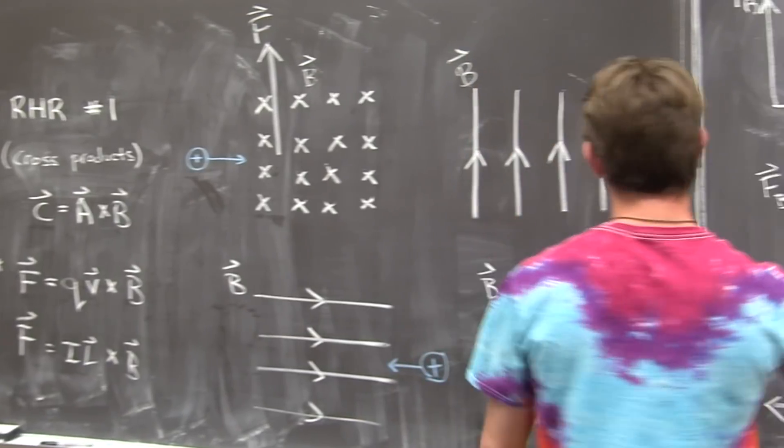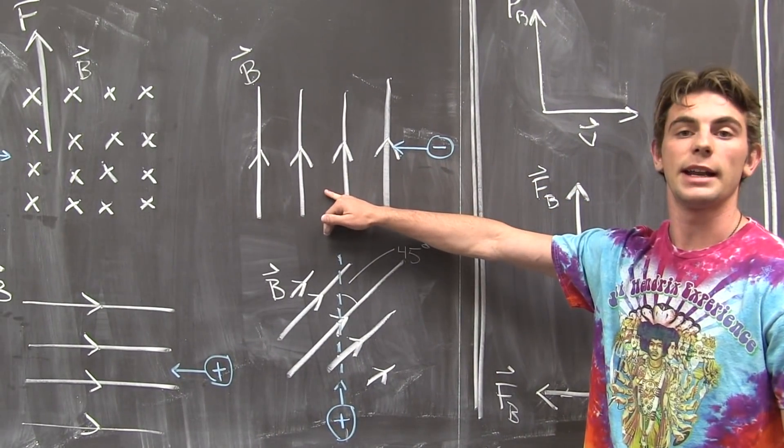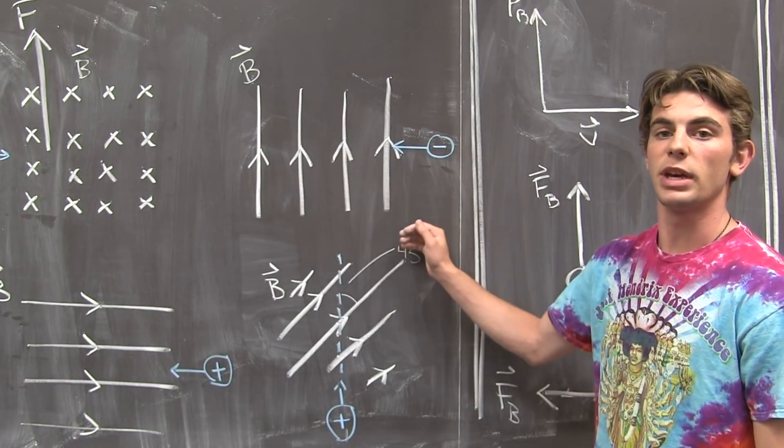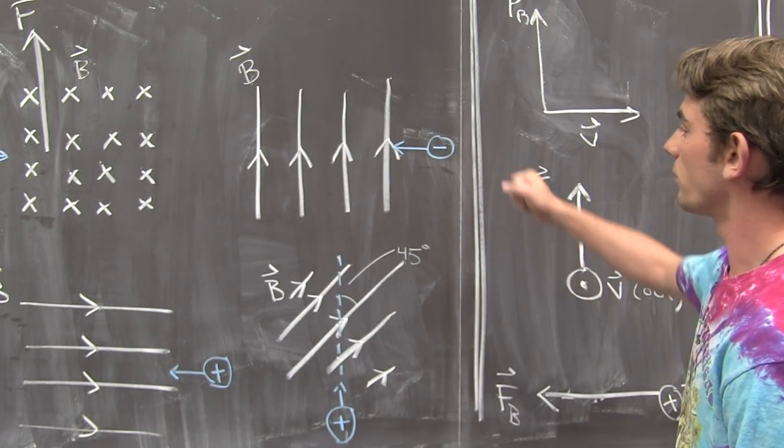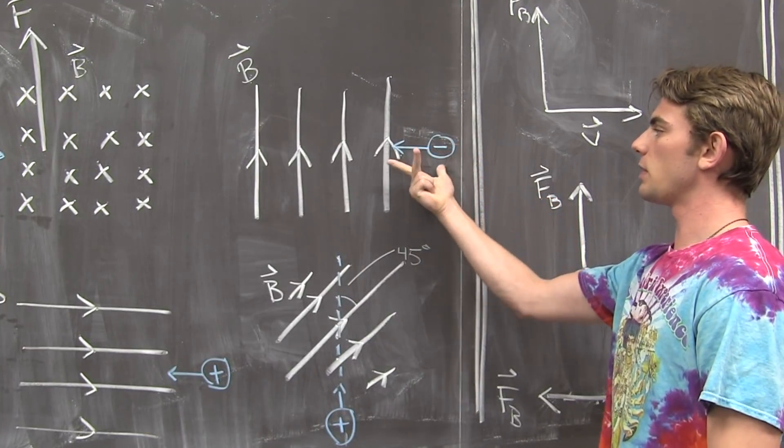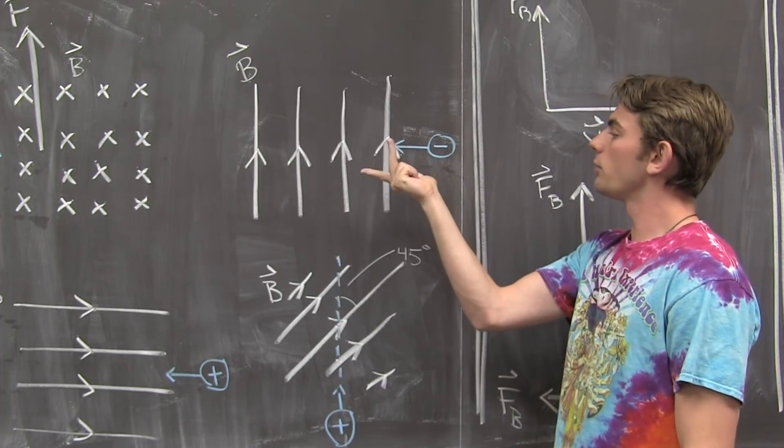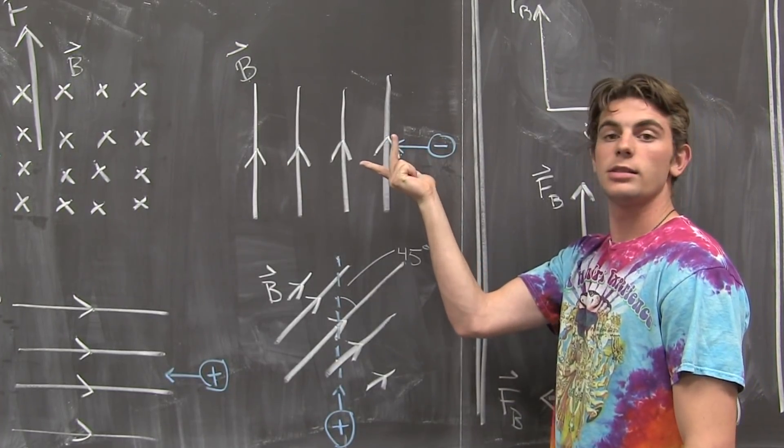A third example is a negative particle moving in a magnetic field going up towards the top of the page. So, first, we line our index finger up with v. b, the middle finger goes to the top of the page, and this would result in a force going into this blackboard.